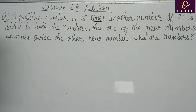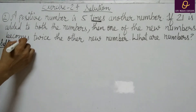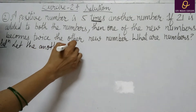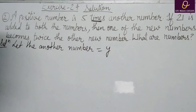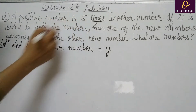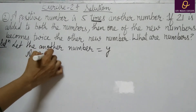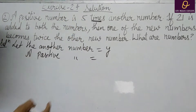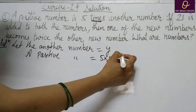आप करेंगे: let the another number be y. यह आपने y किया. अब उसके बाद: A positive number is five times — तो positive number आपके पास क्या होगा? Five times, यानि five multiply by y, that is 5y.